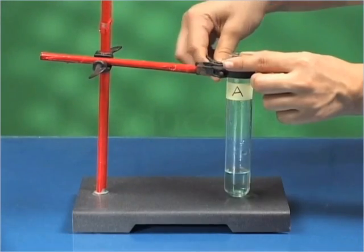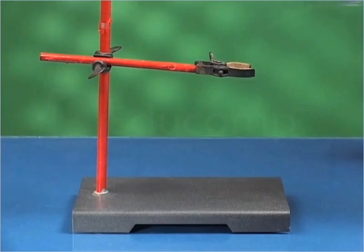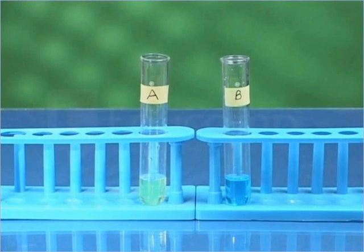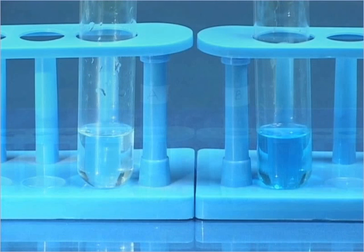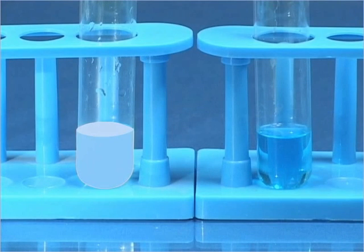Take out test tube A from the clamp stand and keep it beside test tube B for comparison. On comparing both solutions, you will find that the original deep blue color of the copper sulfate solution has faded away.